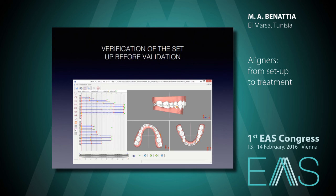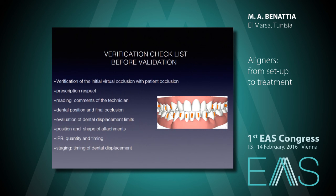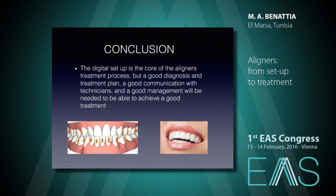After doing the management of the setup, we have to verify the setup before validation. We can follow this checklist for verification before validation. We have different items to verify before validation, like evaluation of dental displacement limits, position and shape of attachments, IPR quantity and timing, and very importantly, the staging and timing of dental displacement. In conclusion, we can say that the digital setup is the core of the aligner treatment process. But we need a good diagnosis and treatment plan, good communication with technicians, and good management to be able to achieve a good treatment.